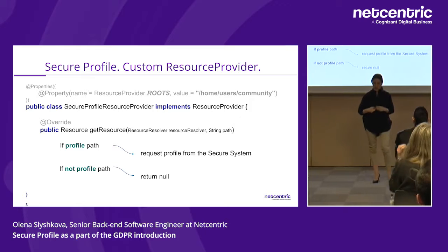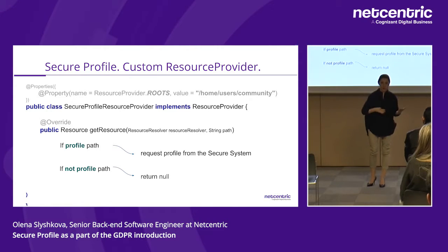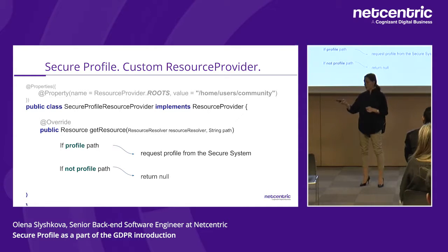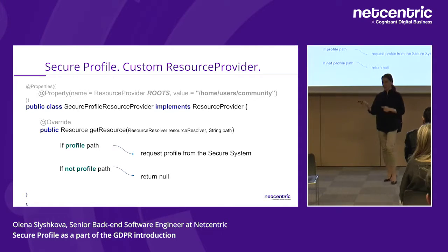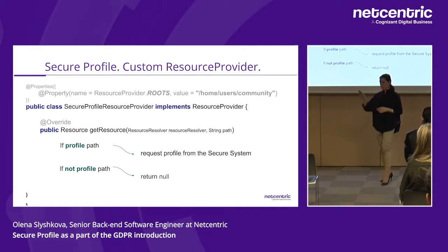The next provider in the chain — in our case the default one — will fetch the resource from JCR as normal. So for non-profile resources everything works as usual. For profile nodes, we apply our custom logic and serve the data from the secure system.